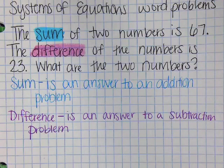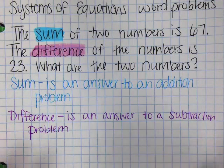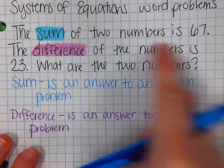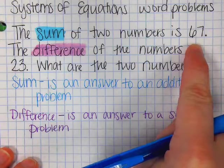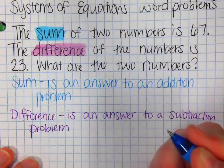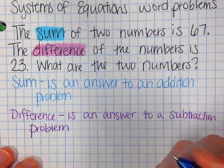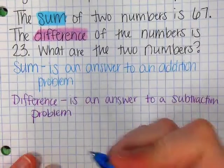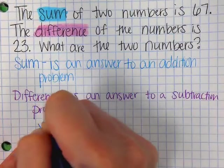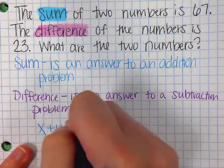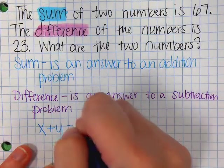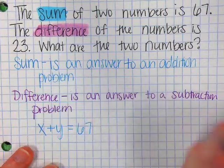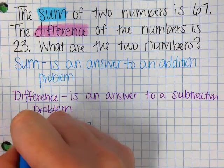Okay, so we're going to set up, we always have to set up two equations. So we know that it says the sum of two numbers is 67. We don't know the two numbers, so again, when we don't know something in math, we use a variable. So we're going to say x plus y has to equal 67. This is the sum equation.